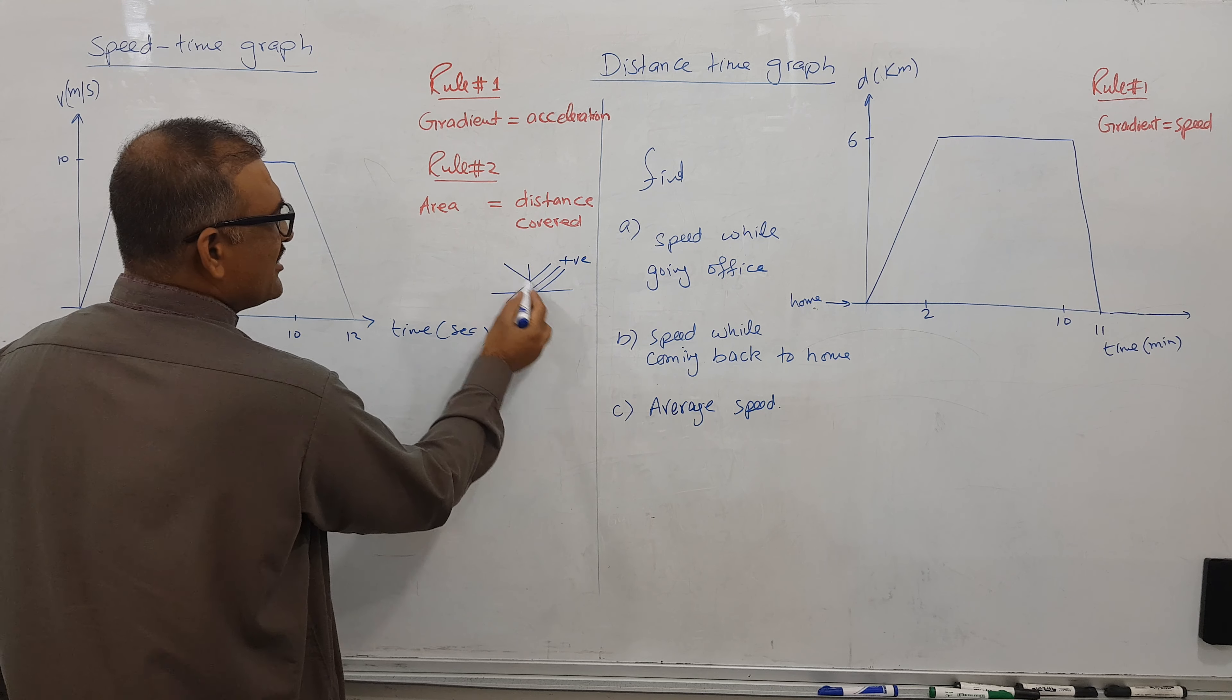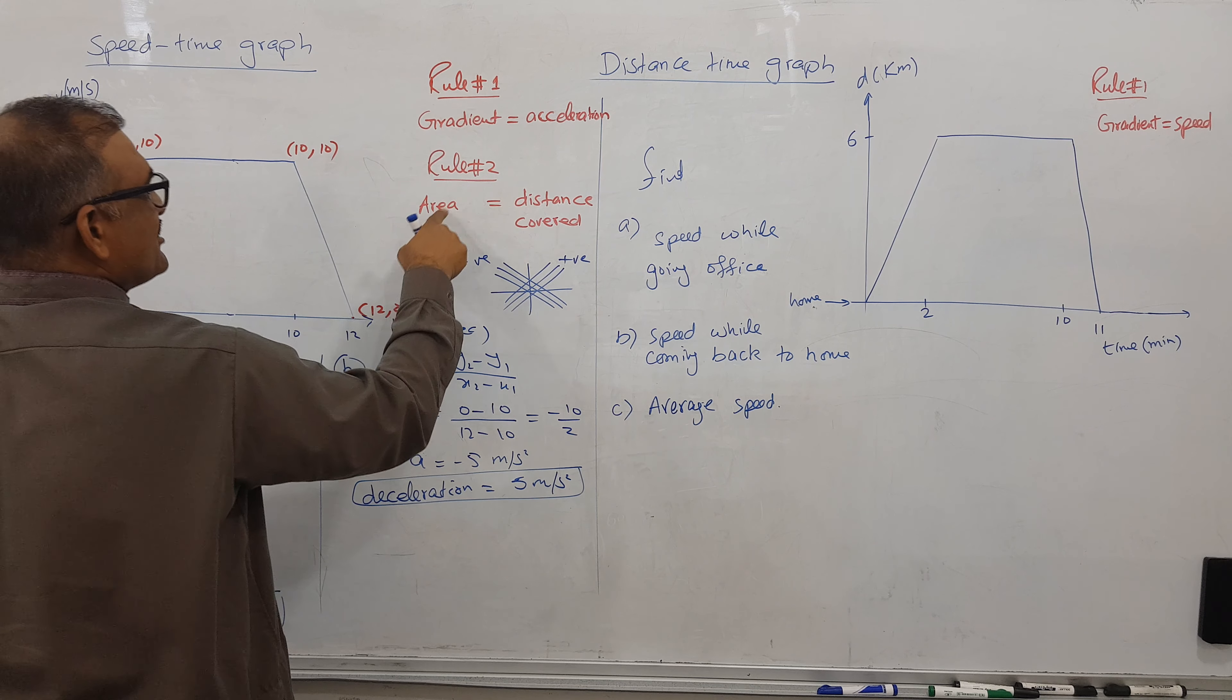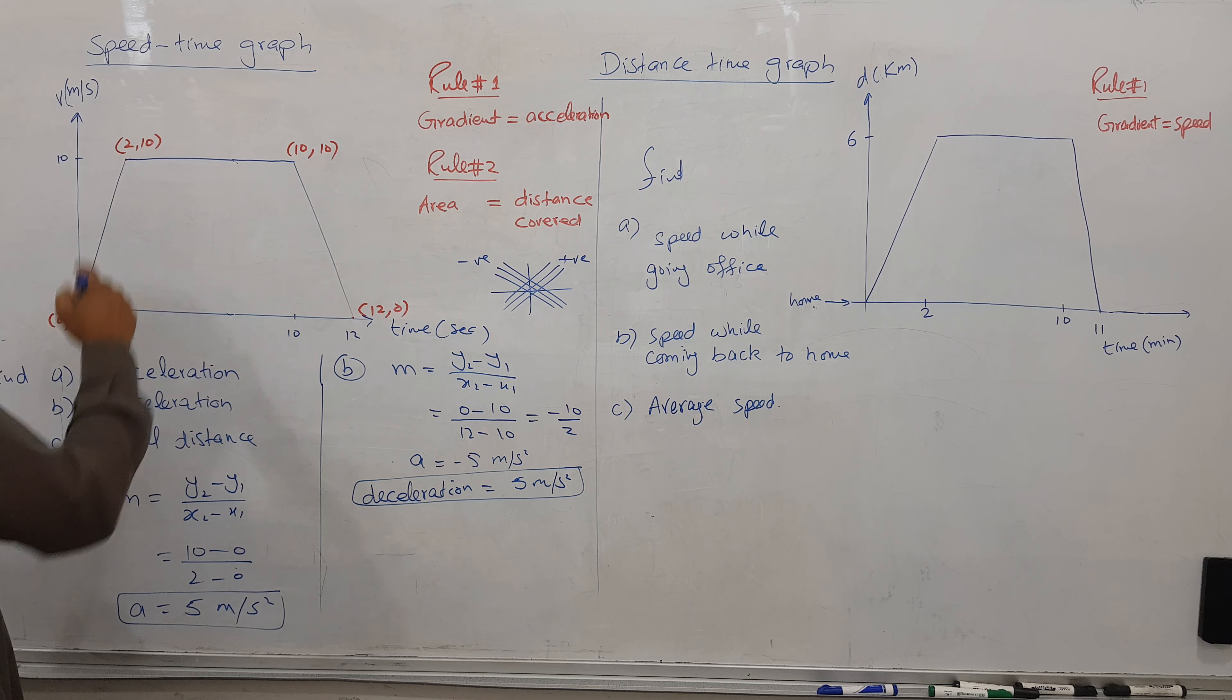For part B, finding deceleration. This coordinate is x=10, y=10, and here x=12, y=0. Using the gradient formula: y2 minus y1 over x2 minus x1, I am getting minus 10 by 2, so negative 5. But when you write the word deceleration, you should remove the sign. So deceleration is equal to 5 meter per second squared.